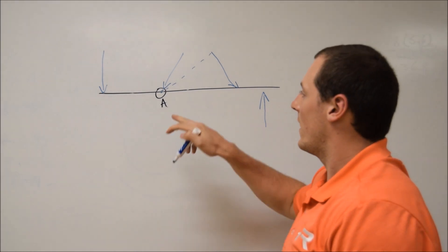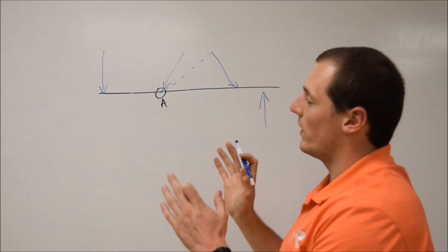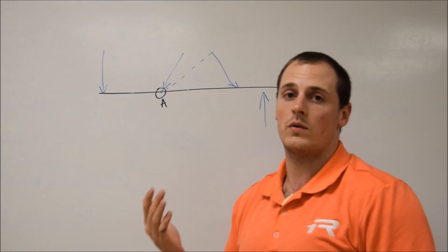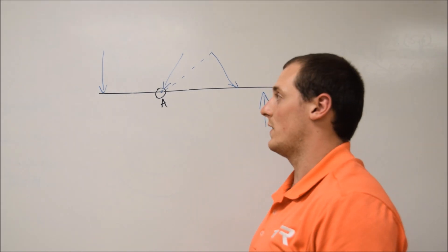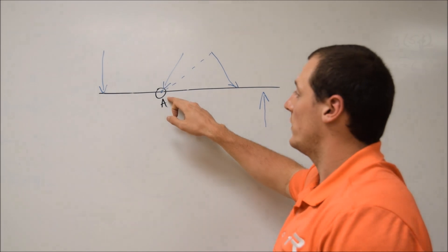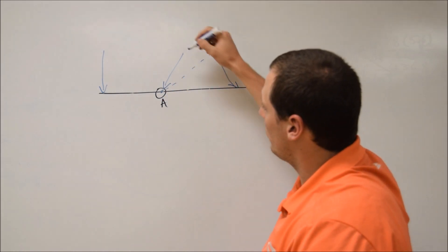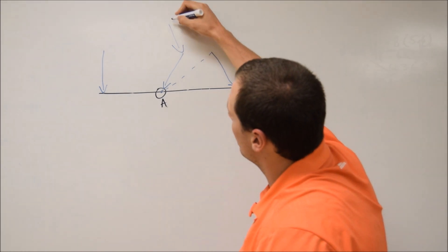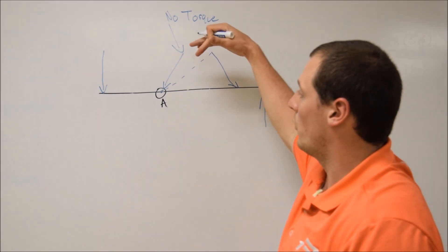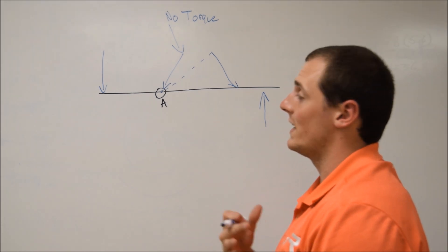Two things to keep in mind for torque: where is the axis of rotation, and what is the force going to tend to cause rotation? Torque is defined as any force that causes rotation or will tend to cause rotation. Anytime we need to assess where the axis of rotation is — if a force is directed exactly upon the axis of rotation — that force will not have any torque, because it's not going to tend to cause a rotation in any direction.